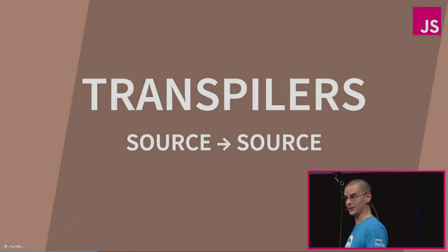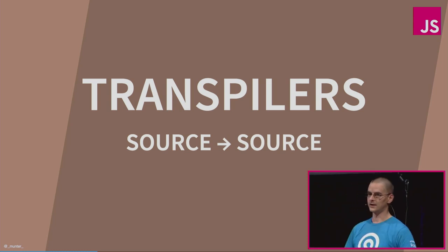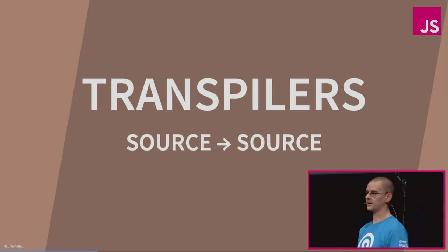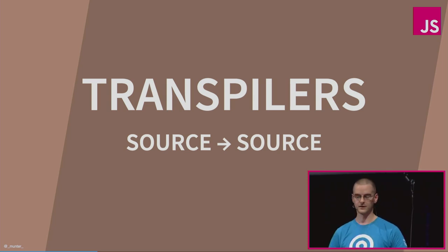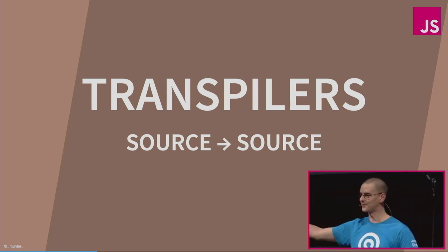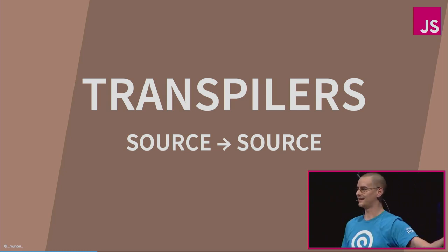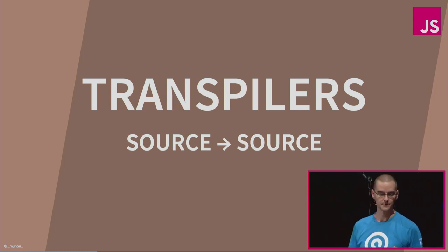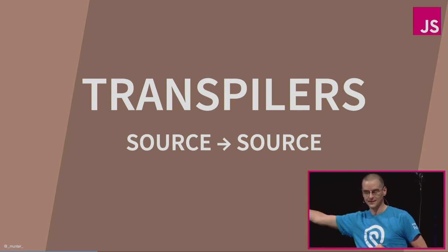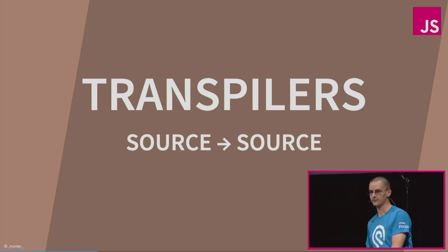This is yet another build tooling talk, but this one is specific to transpilers. In case you don't know what a transpiler is, it's a compiler that instead of compiling source code into machine code, compiles source code into a different type of source code. In this case, the machine code is CSS, HTML, JavaScript and things like that. On the other side, you have the source code that you'd like to write — your ES6, your Sass, Less, and stuff like that.